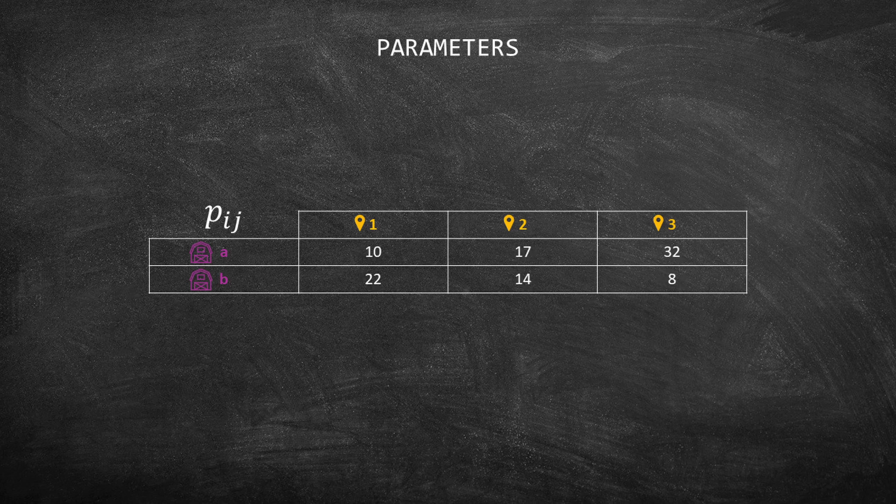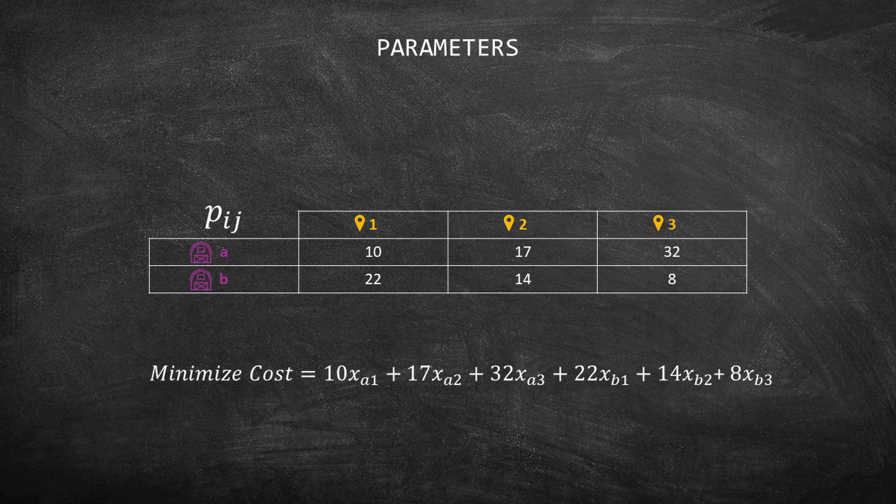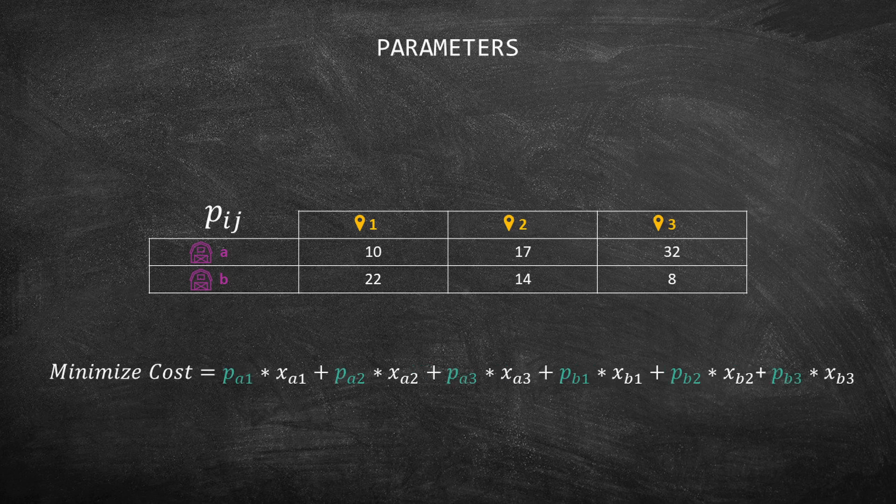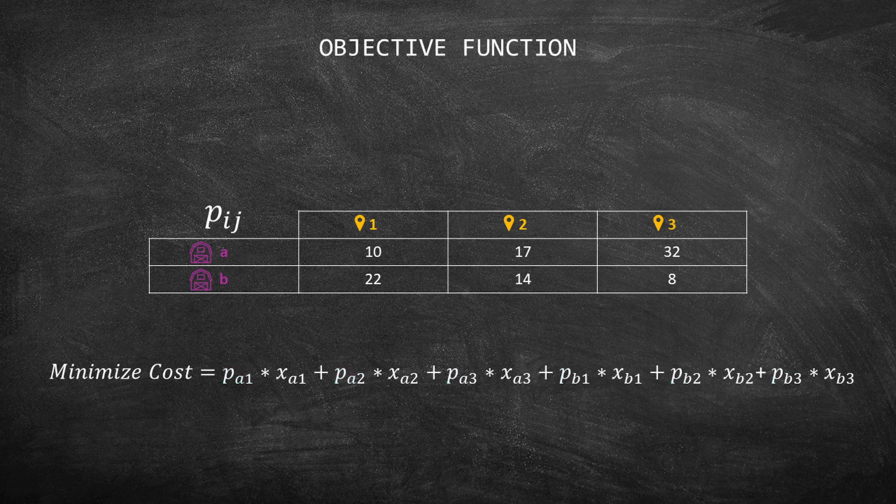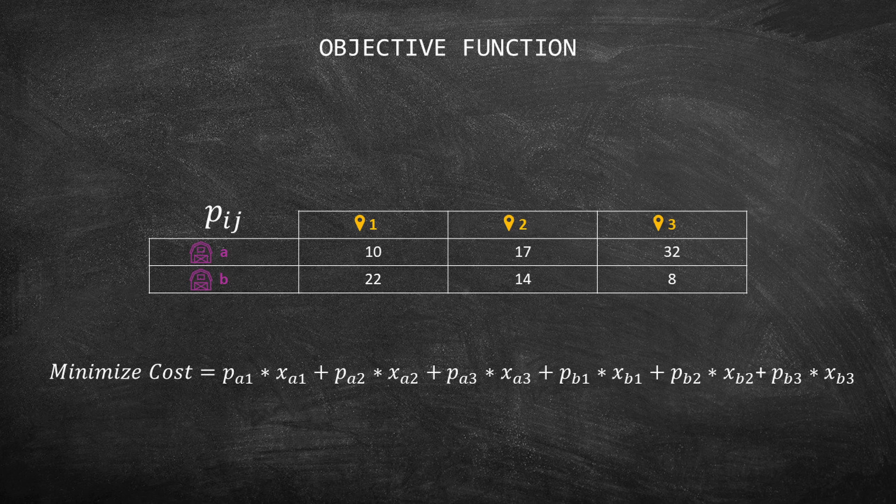Let's go back to the objective function formulation as you see on your screen. Note that I can replace the costs like 10, 17, and 32 by PA1, PA2, PA3, and so on. This leads to the equation that you see on your screen. Observe that I am multiplying PA1 by XA1, PA2 by XA2, and PA3 by XA3, and etc. The indexes A1, A2, A3, B1, B2, B3 are the same in the multiplication.